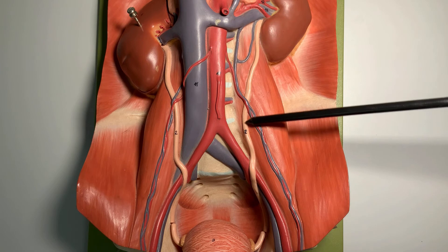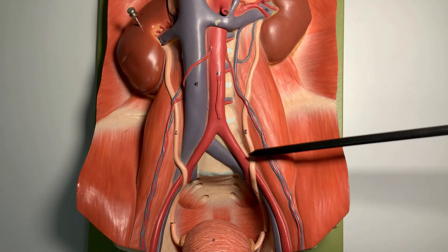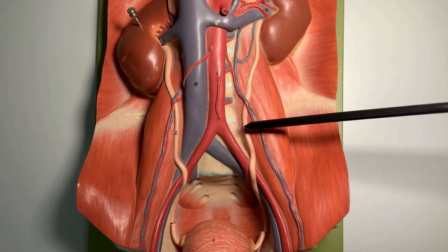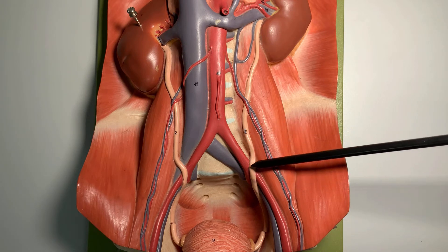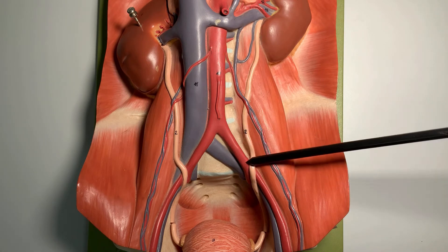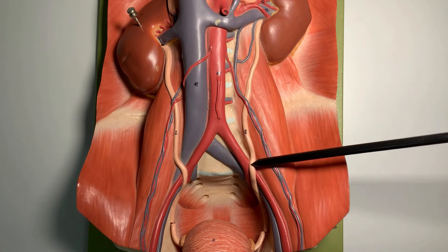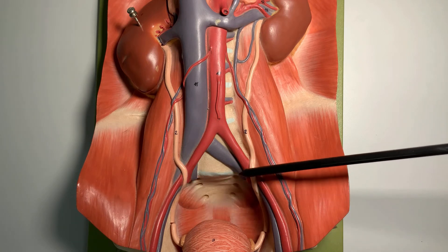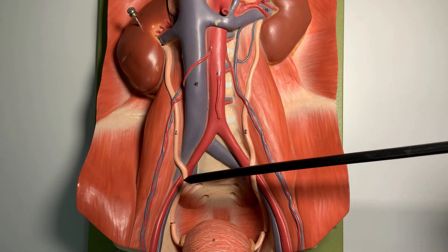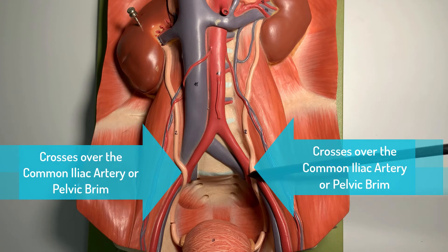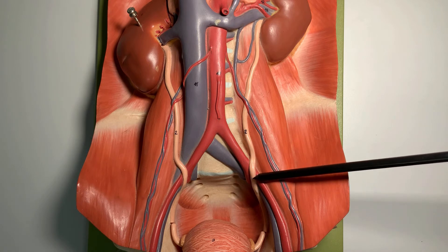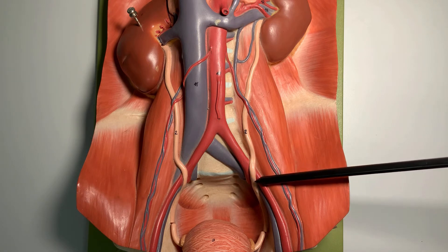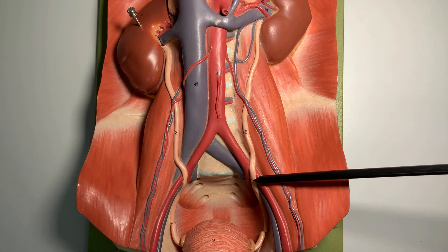The second constriction site: as this ureter travels down — this is the abdominal part of the ureter — when it approaches the pelvis, you can see these are the common iliacs. The place where the ureter crosses the common iliacs is one reference point on both sides, also called the pelvic brim. At this point the ureter is not going straight — it is bending — and due to this bending it acts as the second constriction of the ureter.